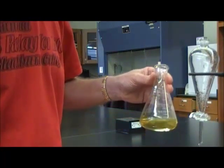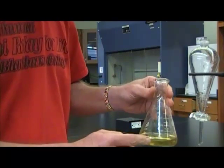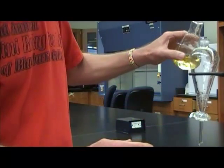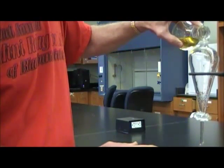Now, you may notice that there's still some yellow color to the water here. It should be clear, so what that suggests is that there's still a little bit of iodine dissolved in the water. I'm going to pour it back in and see if we can't extract that last little bit of iodine out of the water.